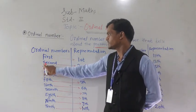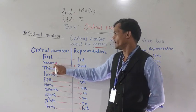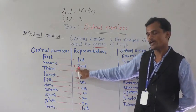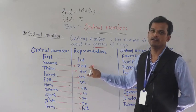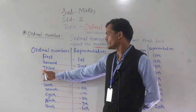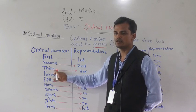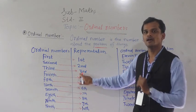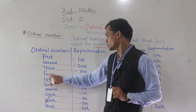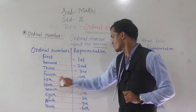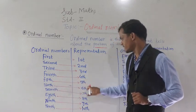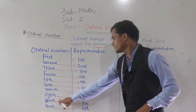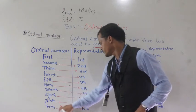Then second, spelled S-E-C-O-N-D. The representation is: write 2, and after that write N-D — so 2nd. Then third, spelled T-H-I-R-D. The representation is: write 3, and after that write R-D — so 3rd. Then fourth, fifth, sixth, seventh, eighth, ninth, and tenth follow in the same way.